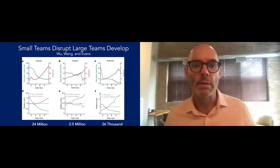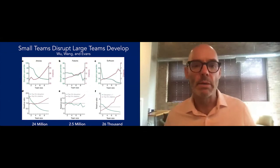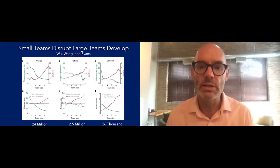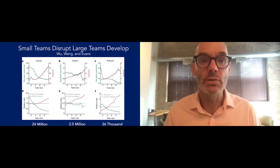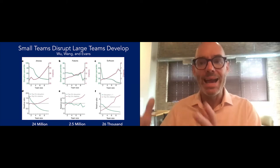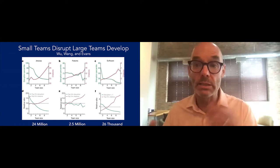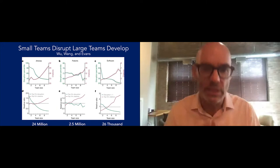This is some work by a friend of mine, Dasha Wang. Whether you look at 24 million papers, 2.5 million patents—that's every patent ever done—or 26,000 software projects on GitHub, you see the same phenomenon that teams do better than individuals. But here's the interesting part. Small teams are really innovative. They're disruptive. And it's large teams that actually develop and carry things out. The new ideas are interdisciplinary, so you need a small, deeply focused interdisciplinary group to come up with the ideas. Then you need larger interdisciplinary teams to have them follow through.